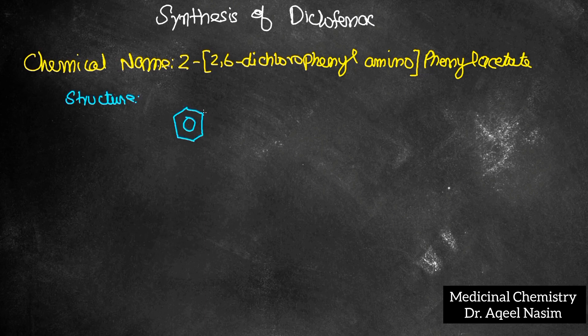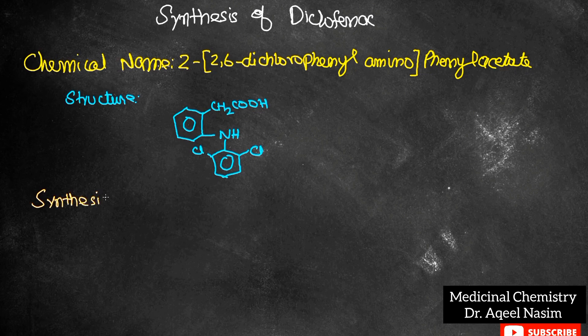The structural representation of diclofenac is just like this. We have a benzene ring, CH2COOH, one carbon bonded with NH, another benzene, and 2 chlorine atoms.